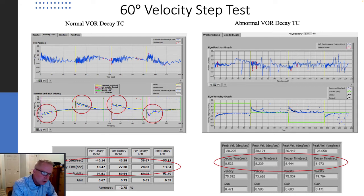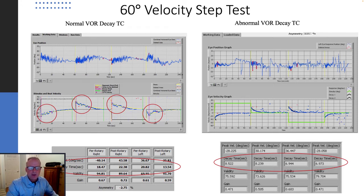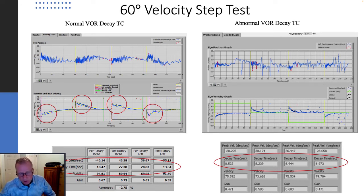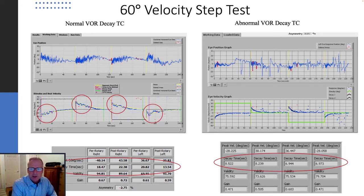You can see the slow regression, the slow decay of nystagmus response in a healthy individual. But in an abnormal individual — one that is lacking the ability to produce enough afferent drive for the neural integrator to store, or the neural integrator to actually hold onto it — you have a very shortened time constant that really doesn't exceed much beyond cupular mechanics.